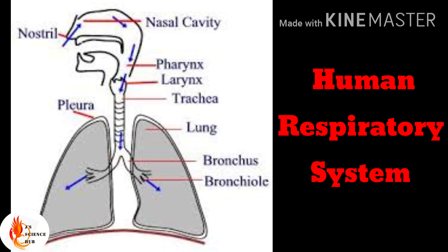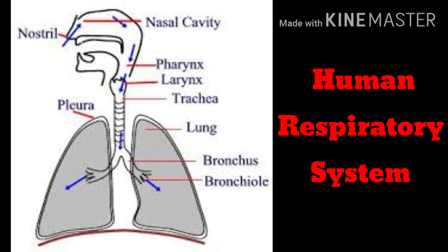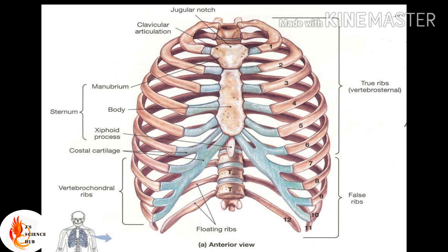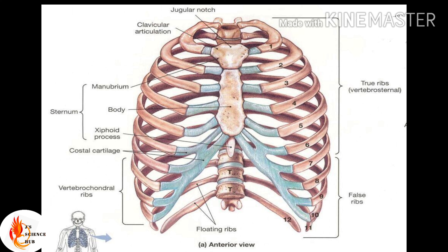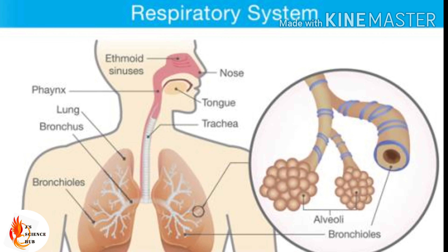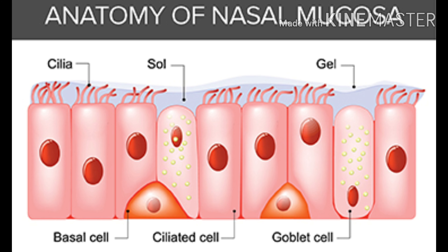From the nasal cavity, air enters the pharynx, which is a common part for the digestive as well as the respiratory system. Then it enters the larynx, then the trachea. There are two lungs present in humans. The trachea further divides into bronchi, which branch into bronchioles inside the lungs. The lungs are protected in the thoracic cavity by the rib cage, which is made up of ribs.